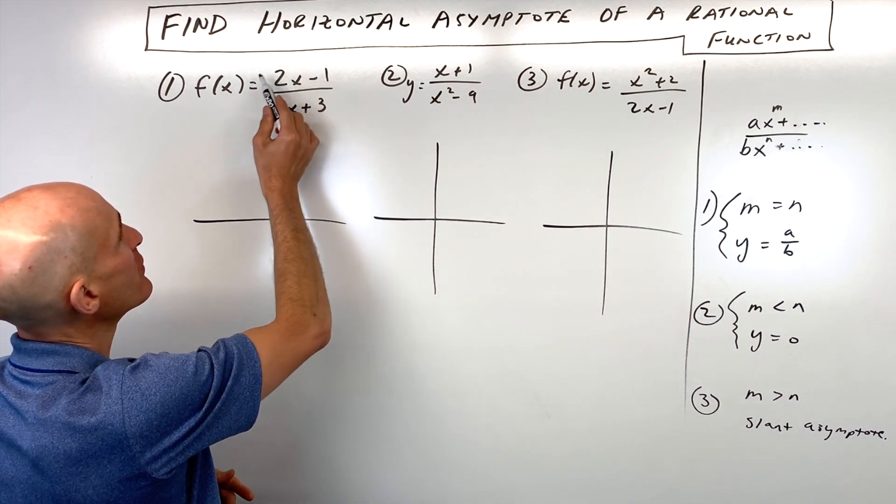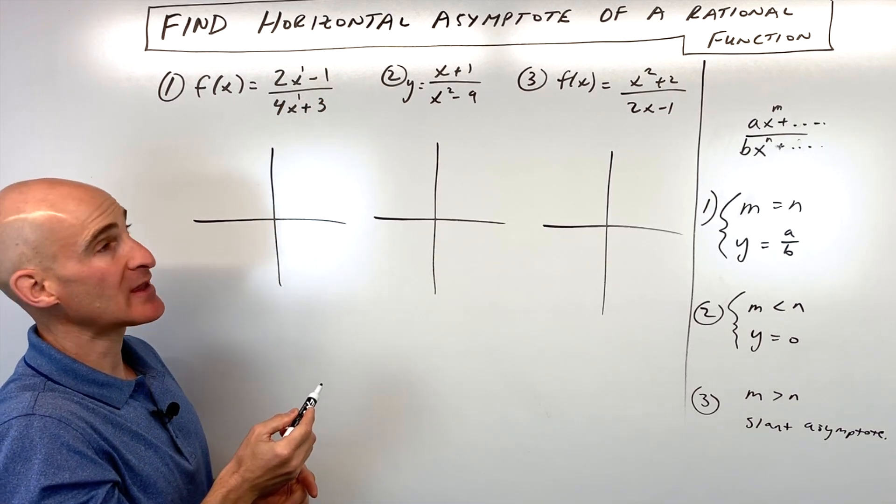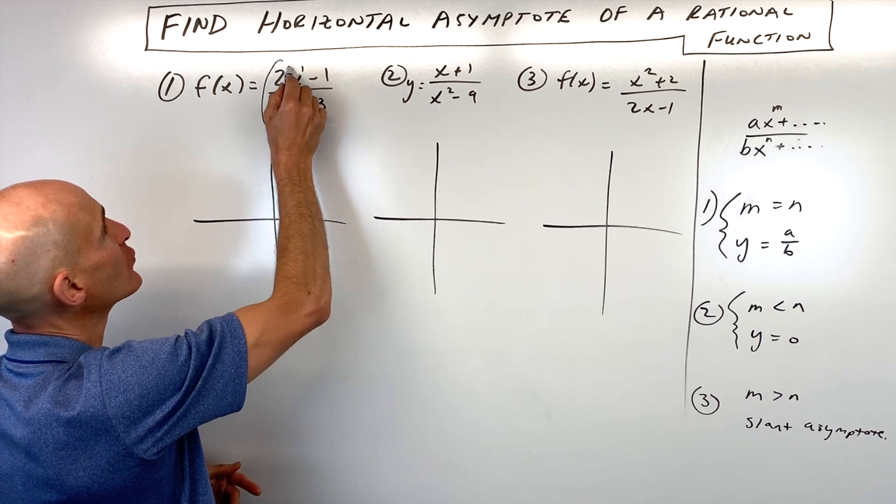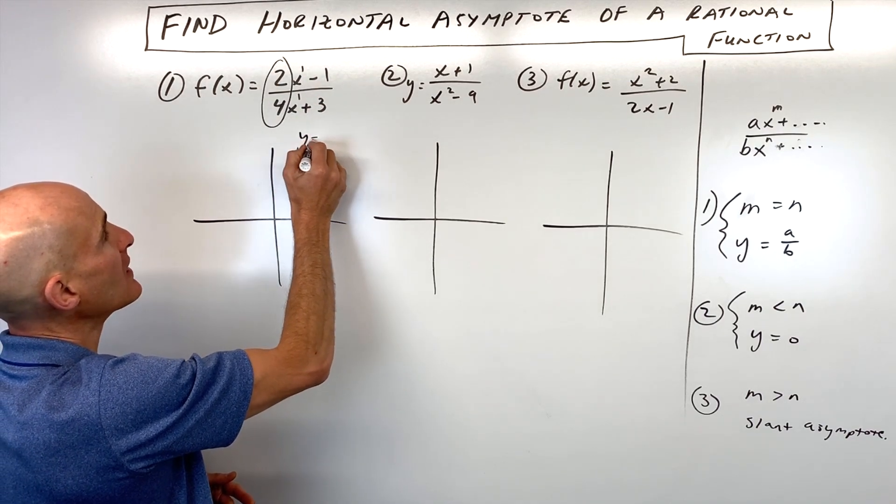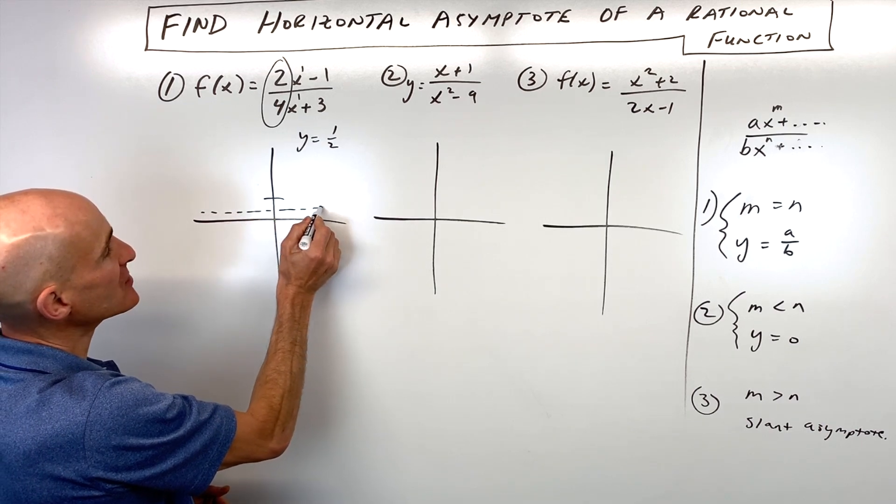So the first one here, what do you think? Well, you can see these are both x to the first. Okay, so it's a tie. So what that means is we end up with the ratio of the coefficients, which is y equals two-fourths, which reduces to one-half. So your horizontal asymptote would look something like that.